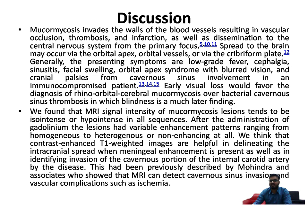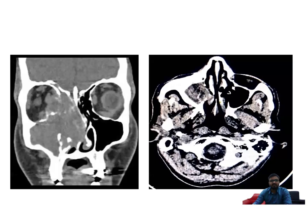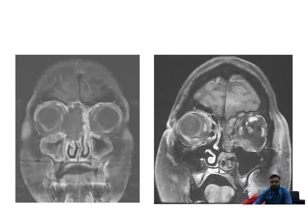This has been previously described by Mohindra and associates, who showed that MRI can detect cavernous sinus invasion and vascular complications such as ischemia. This coronal CT image at the level of the maxillary sinus and nasal cavity shows a large isodense mass lesion in the right maxillary sinus extending into the nasal cavity and ipsilateral orbit with bone destruction. A post-contrast coronal image shows mucosal thickening of the right maxillary sinus with a large isodense non-enhancing mass lesion involving the ethmoidal air cells.